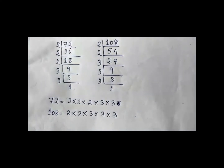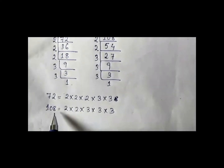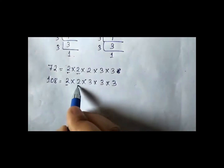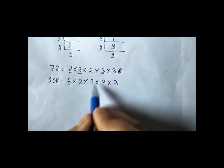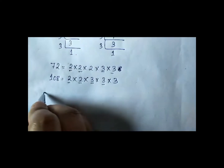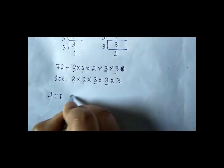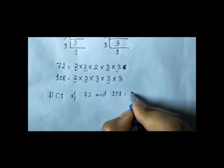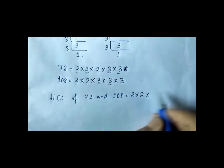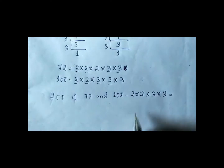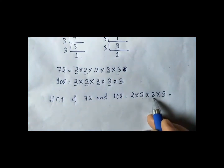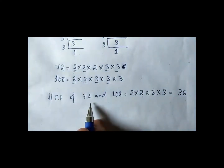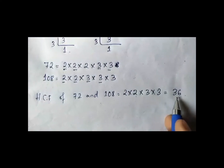Now you see what are the common factors of 72 and 108. 2 is common, 2 is common again, and 3 and 3 are common. Now we have to find the HCF: 2 into 2 into 3 into 3. 2 times 2 is 4, 4 times 3 is 12, 12 times 3 is 36. So the HCF of 72 and 108 is 36.